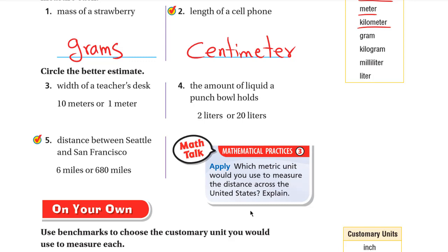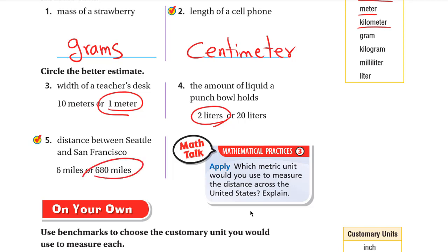Circle the better estimate: the width of a teacher's desk — 10 meters is too big, so 1 meter is correct. For how much liquid a punch bowl holds — 20 liters is too much, so 2 liters is the answer. For the distance between Seattle and San Francisco — 6 miles would only be about 2 hours of walking, which is far too short for that distance, so it's 680 miles.